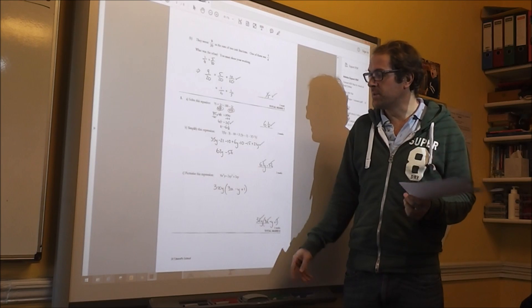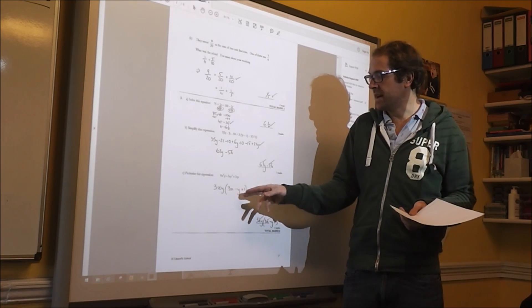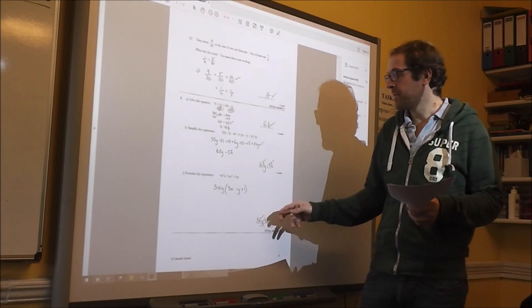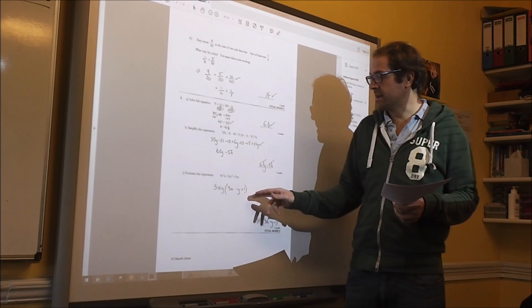3xy times 3x is 9x squared y. 3xy times minus y is minus 3xy squared. And then 3xy times 1 is 3xy.